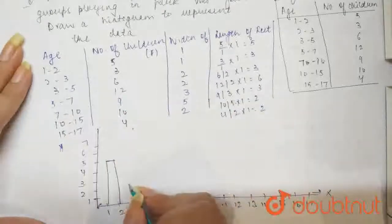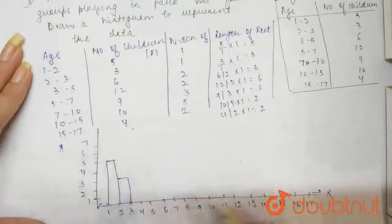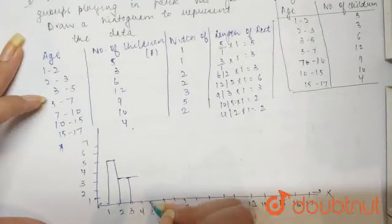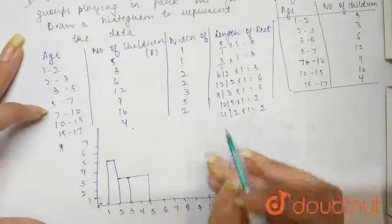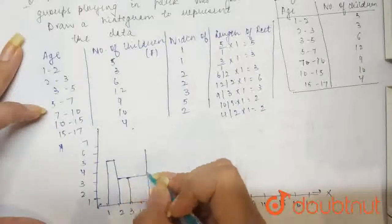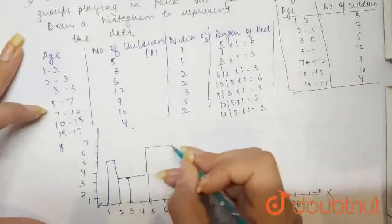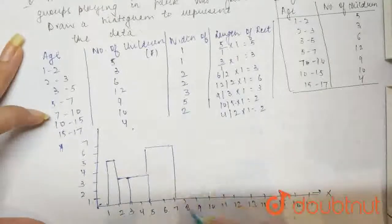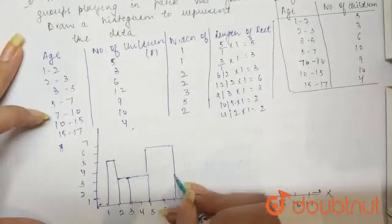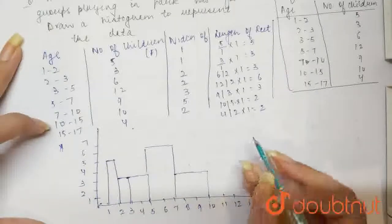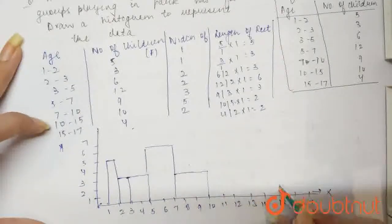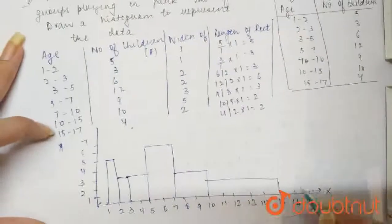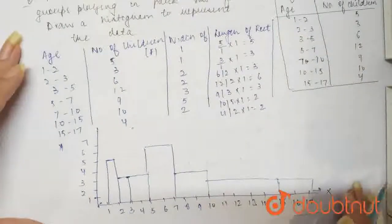Now from 2 to 3, this will be 3. Now again 3 to 5 will be 3. Then 5 to 7 is 6. So 5 to 7 will be 6. Then 7 to 10 will be 3. Then 10 to 15, we are having 2. So from here to here. Then 15 to 17, we are having 2. So this is your histogram.